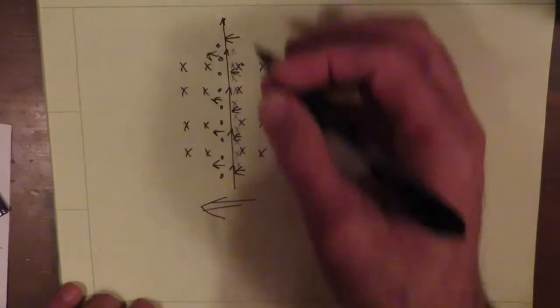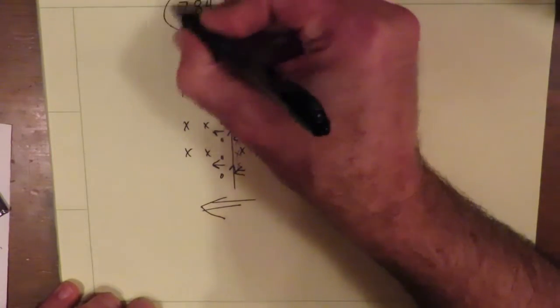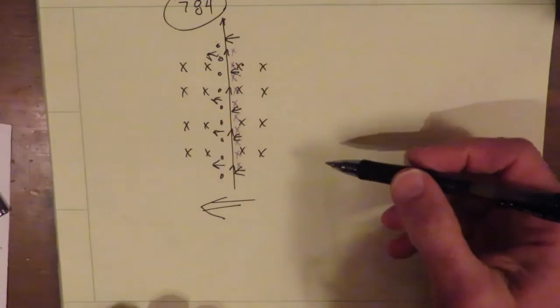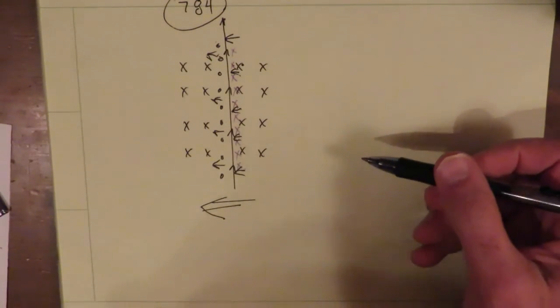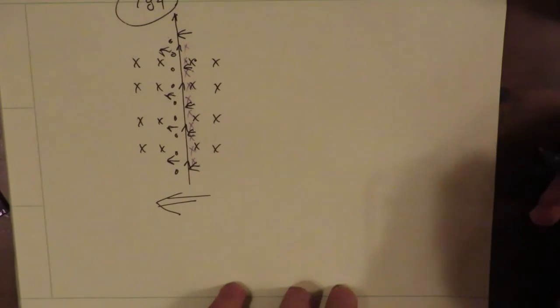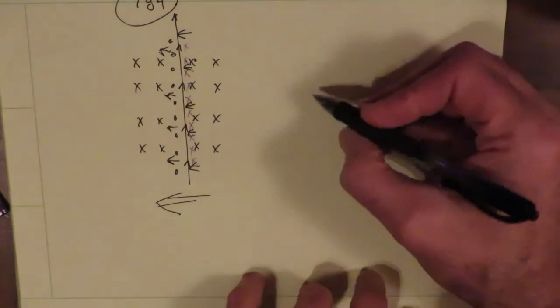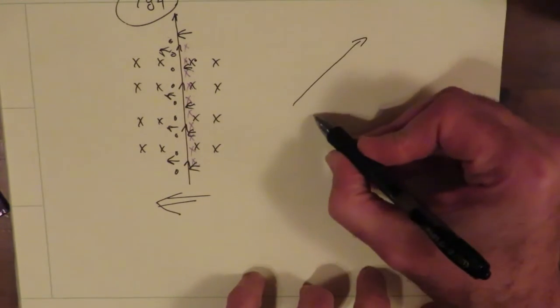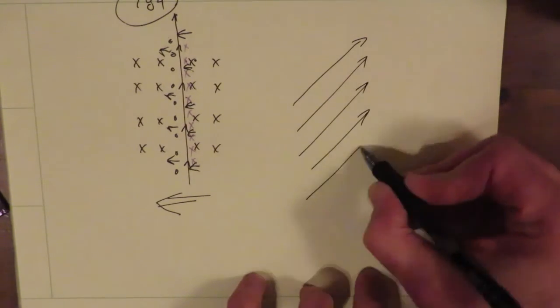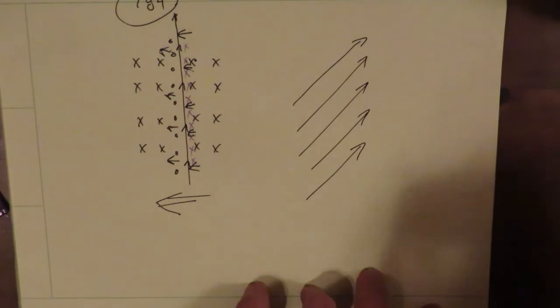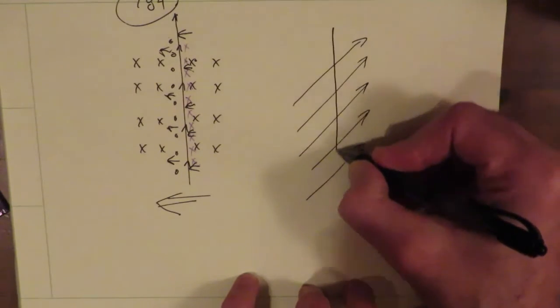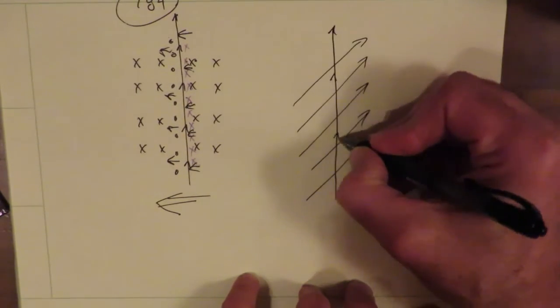This by the way is on page 784 in your book is where they talk about this stuff. Now, what if the, I'll pause there. Now what if we change it a little bit? What if we say that the magnetic field is running in the plane of the page, like this? And then we run our current carrying wire kind of the same way we did before. We'll have the current going up this way.